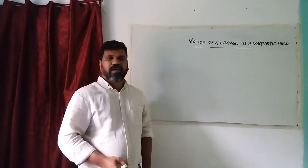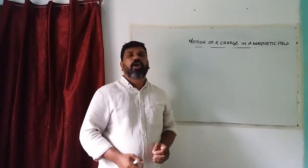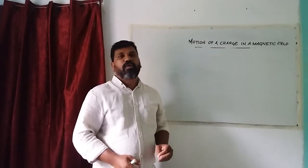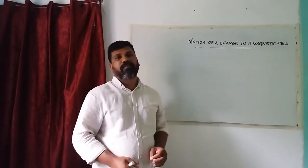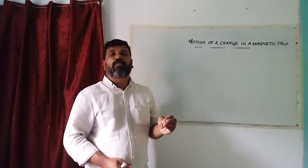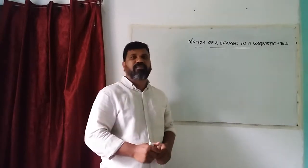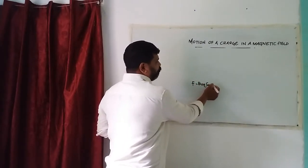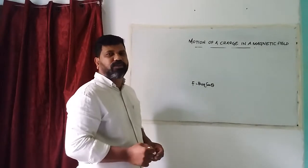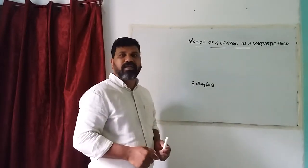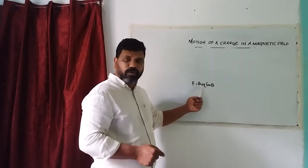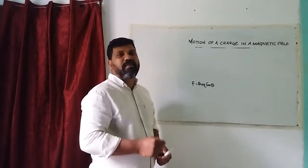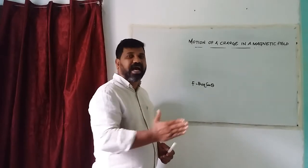What is this chapter? In this chapter, we call the Lorentz Magnetic Force. It is a positive charge moving at a particular velocity V in a uniform magnetic field, experiencing a particular force. The equation is F equal to BVQ sin theta. B is the magnetic field, V is the velocity, Q is the amount of charge, and theta is the angle between the magnetic field and the direction of velocity.